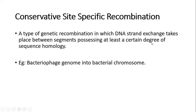Conservative SSR is a type of genetic recombination in which the DNA strand exchange takes place between segments possessing at least a certain degree of sequence homology. Last time we saw that there was no sequence homology, but in this case it is required. For example, the phage genome getting integrated into the bacterial chromosome.